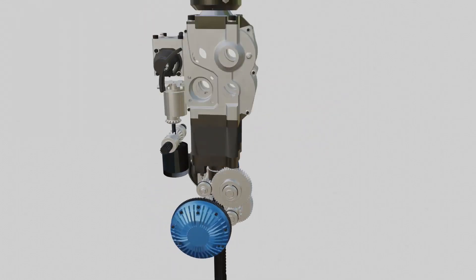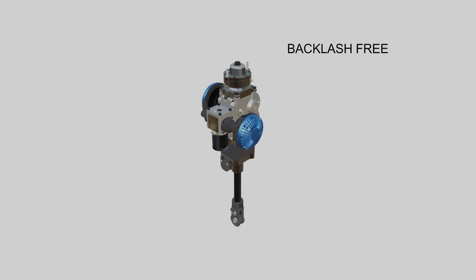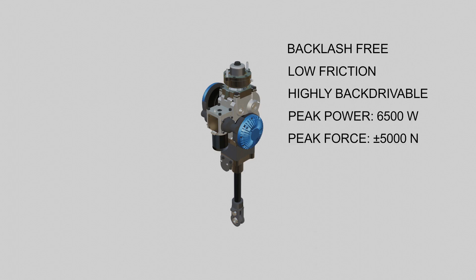Thanks to the magnetorheological clutches, this actuator is backlash-free, has low friction, and is highly back-drivable. It has a peak power of 6,500 watts, a peak force of 5,000 newtons, a max speed of 2 meters per second, and a force bandwidth of 92 hertz.